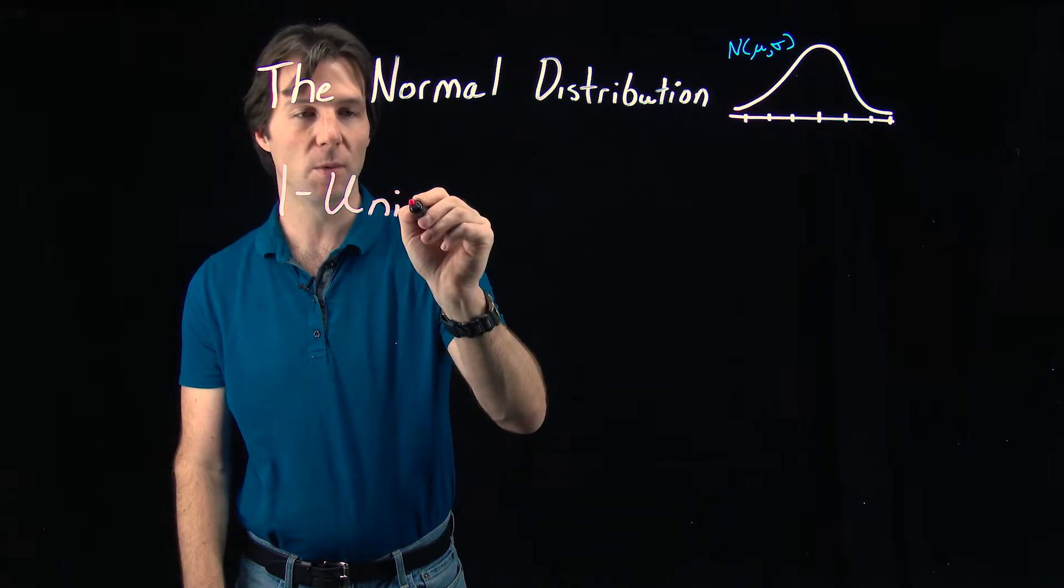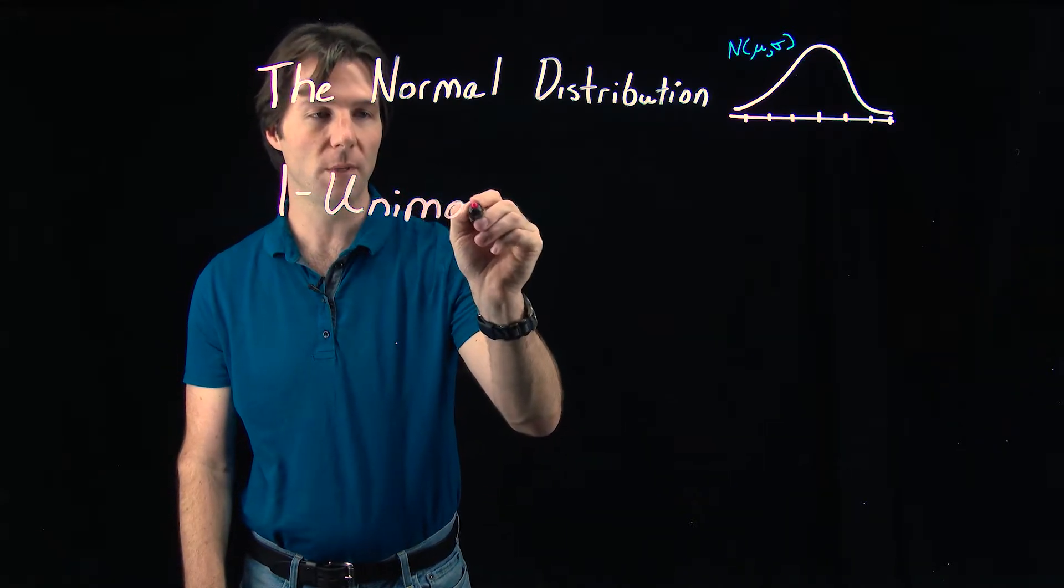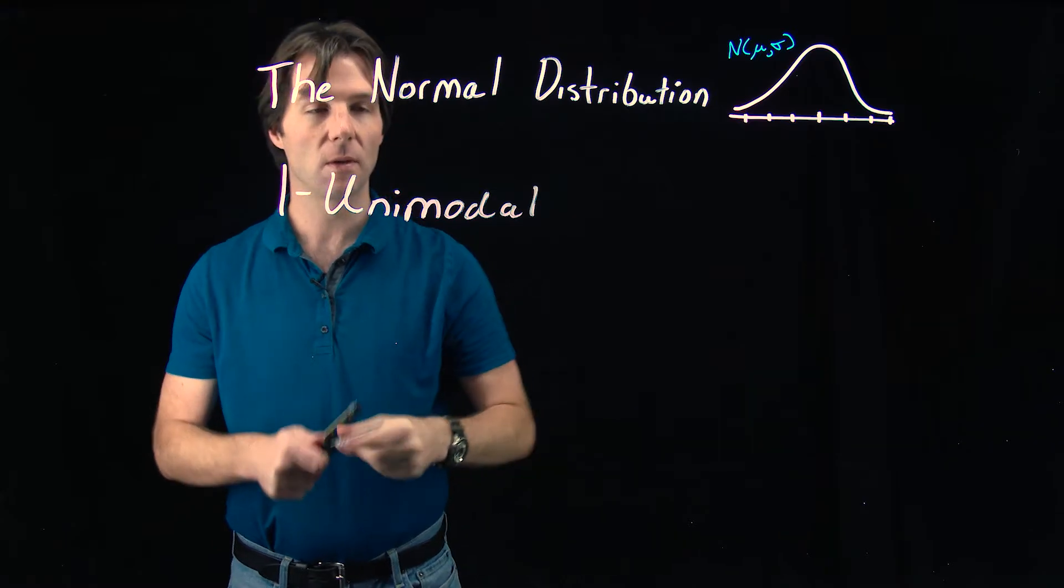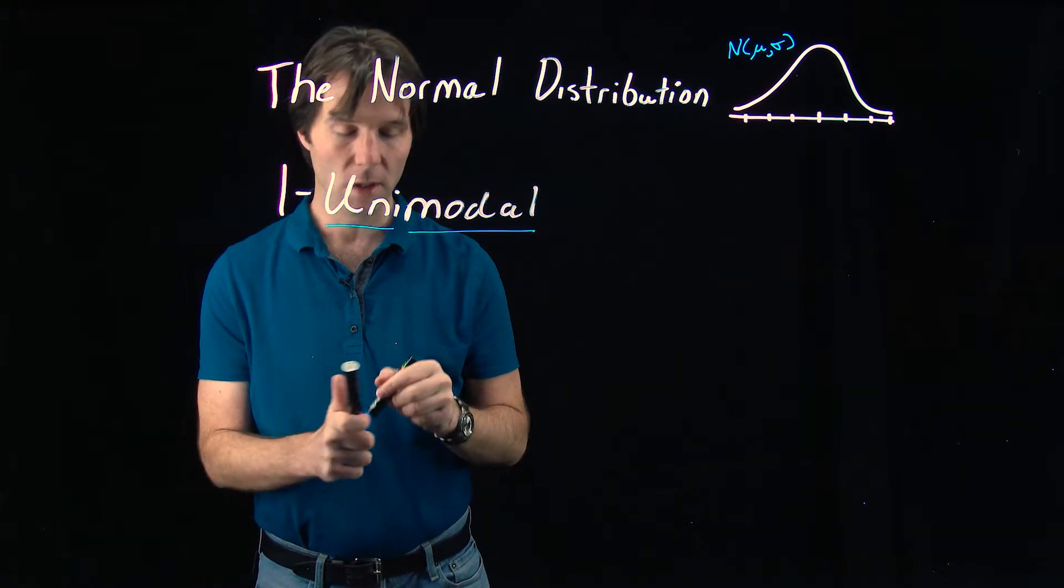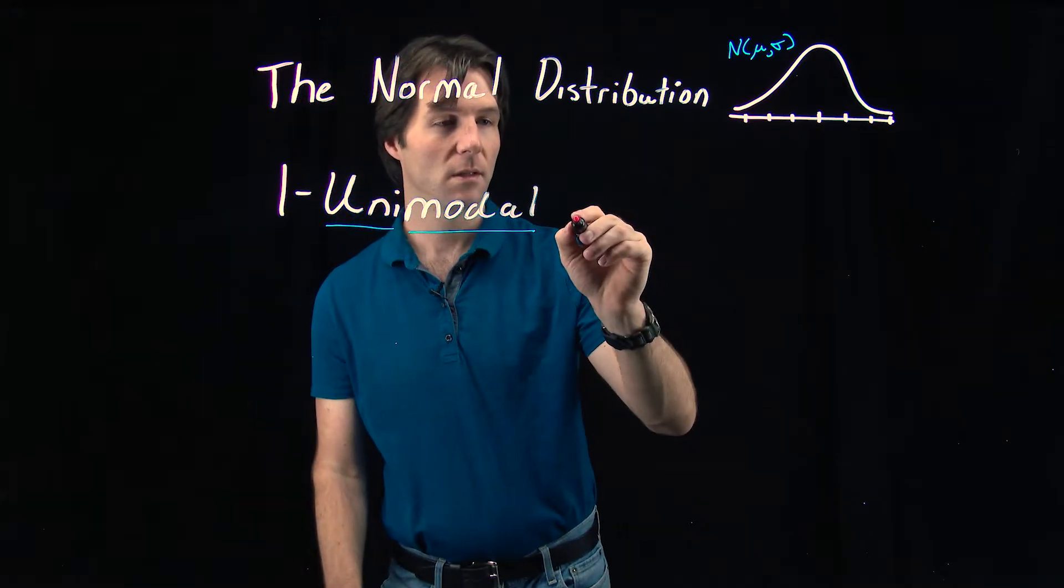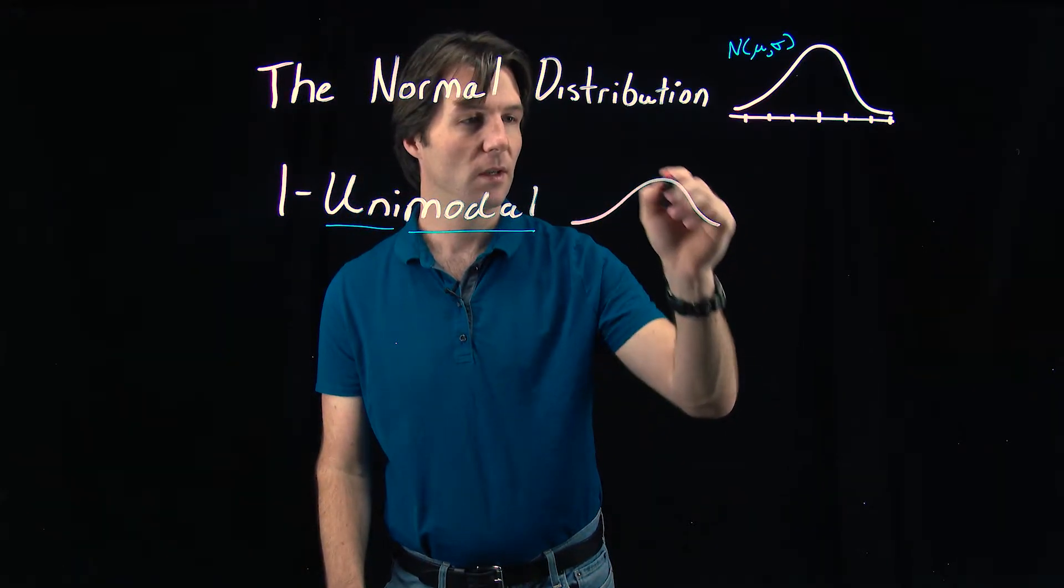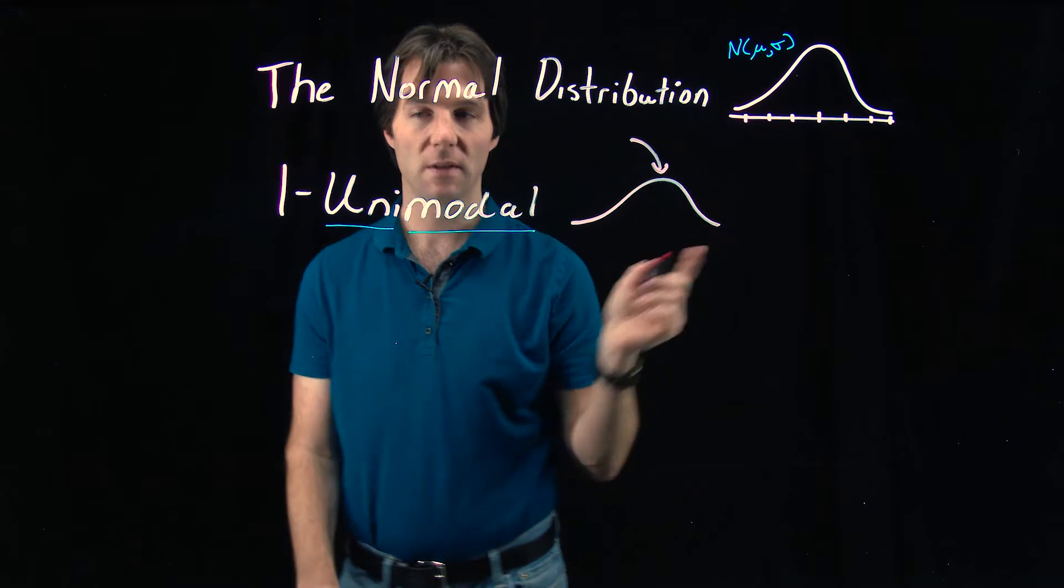Let's break down what the word unimodal means. Well, unimodal means one mode. Modal comes from mode and uni means one. So when we look at the curve, you'll notice there is one mode to it, and there it is.